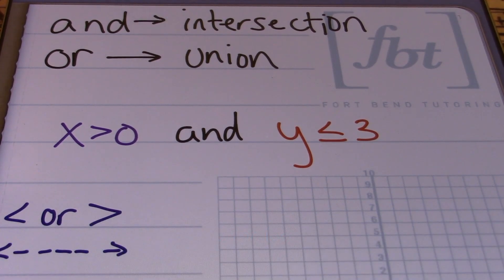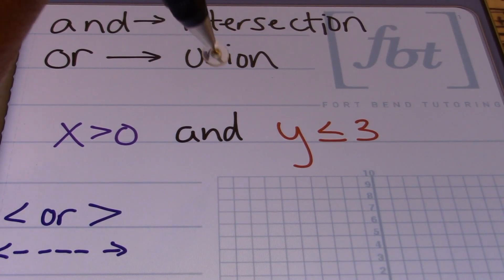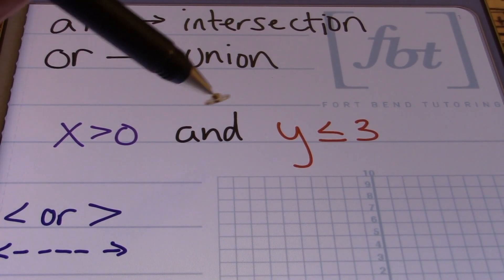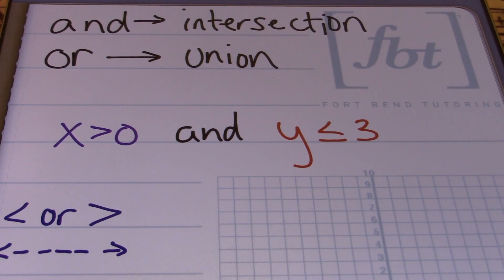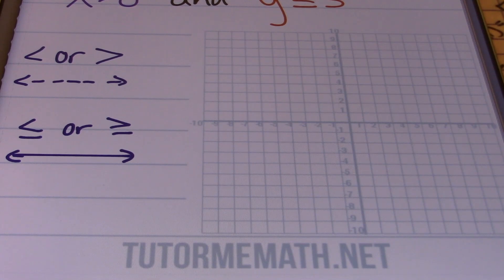For an example, we have an intersection right here — I know because I have the word 'and' between two linear inequalities. I have x is greater than zero and y is less than or equal to zero, and we're going to graph these two inequalities on our Cartesian plane. Keep in mind that when you have a less than or a greater than symbol, you're going to use a dashed line to represent that inequality on your graph.